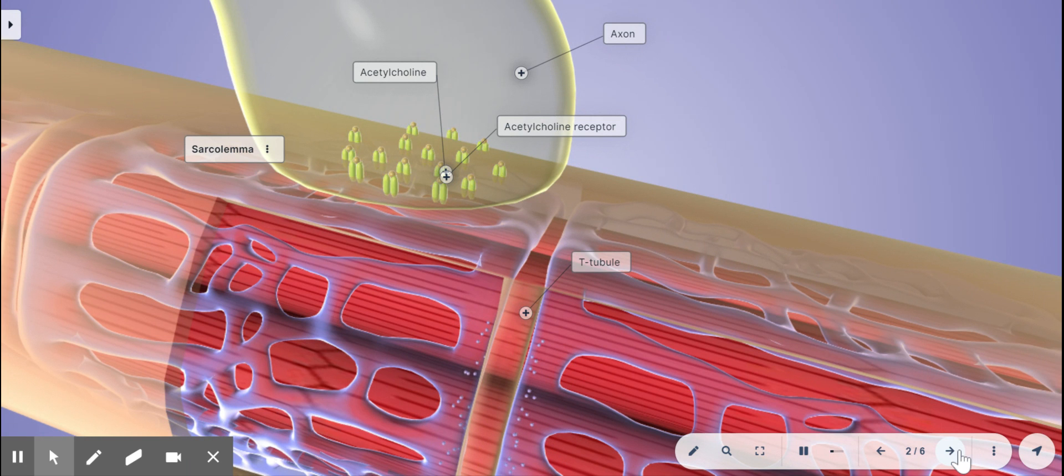After acetylcholine attaches to its receptors on the sarcolemma, the muscle fibers become more positively charged. This generates an action potential that travels along the sarcolemma and dives deep into the muscle cell through these T-tubules.